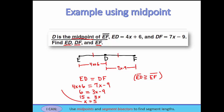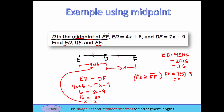With x equal to 5, we plug back in to find each length. For ED: 4 times 5 plus 6 equals 20 plus 6, which is 26. We don't really have to calculate DF separately since D is the midpoint, but checking: 7 times 5 minus 9 equals 35 minus 9, which confirms DF is also 26. And since EF is the entire distance, EF equals 26 plus 26, so EF is 52. Your I can statement is: I can use midpoints and segment bisectors to find segment lengths.